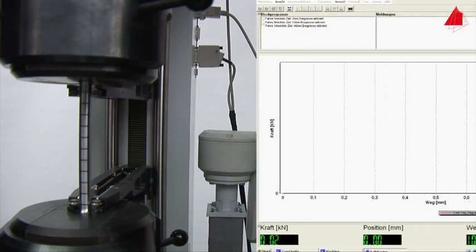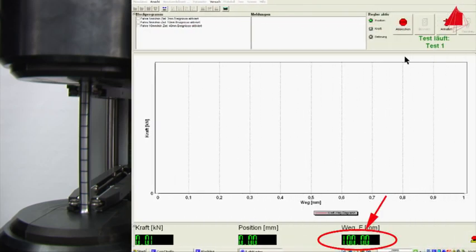The gauge length is displayed at the bottom right hand corner of the screen. At the beginning it amounts to 100 millimeters.